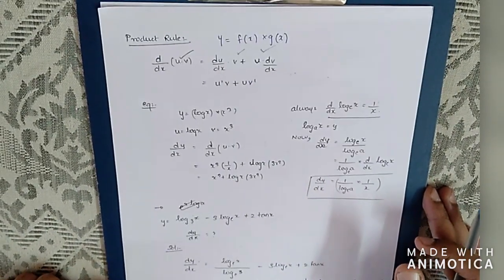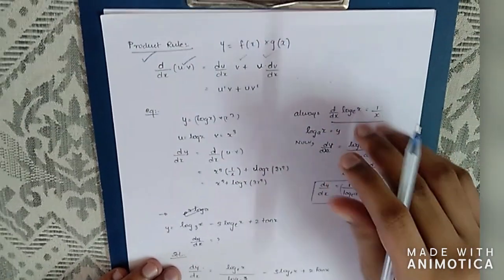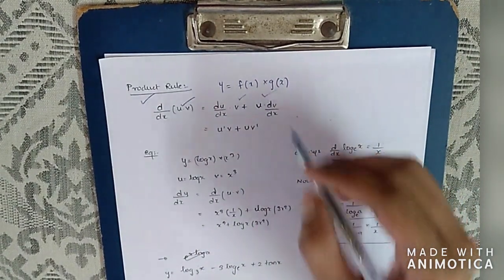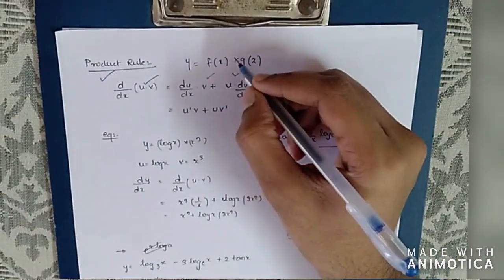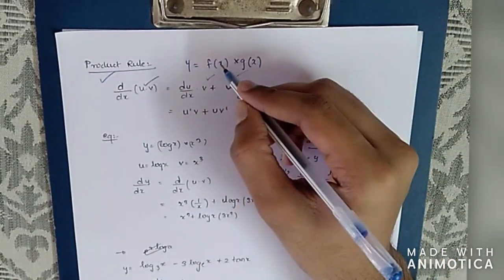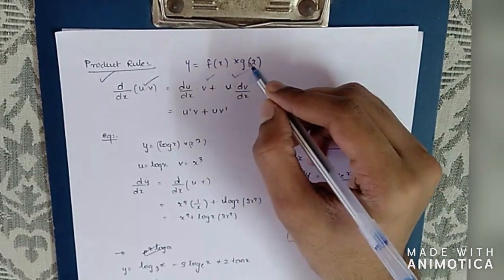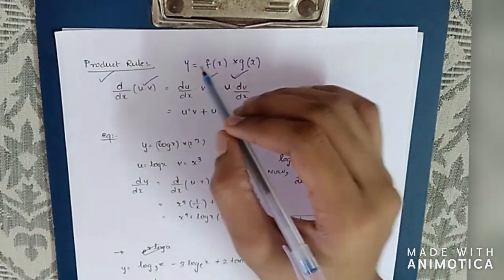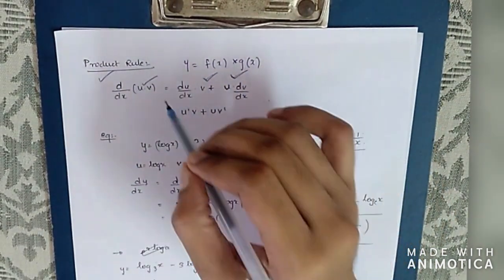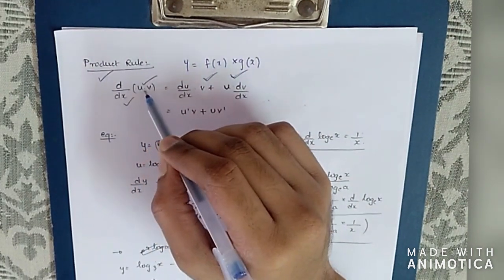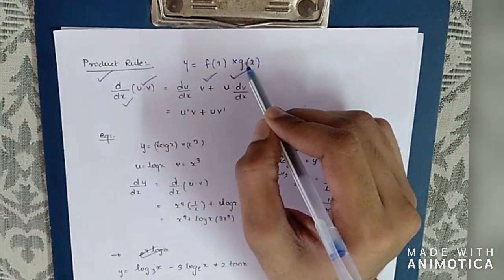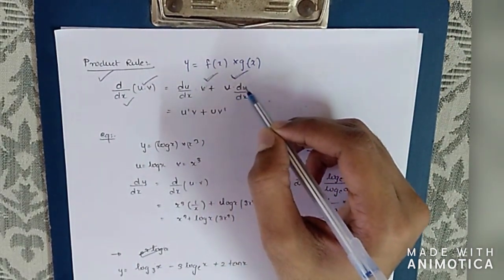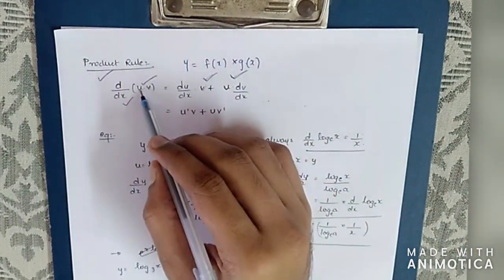Welcome friends. In this class we have one of the differentiation formulas — the product rule. The product rule applies when we have f(x) multiplied by g(x), two single-variable functions. The formula is: d/dx of u into v equals du/dx into v, plus u into dv/dx.